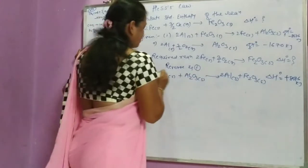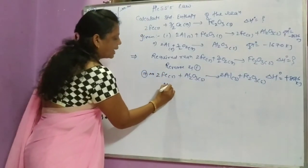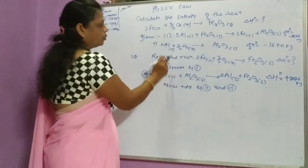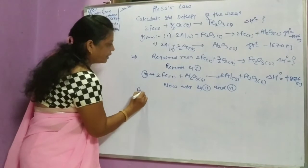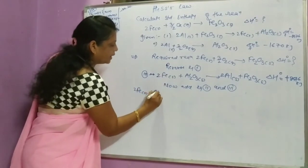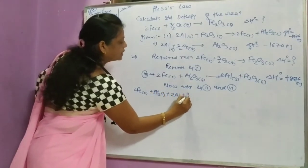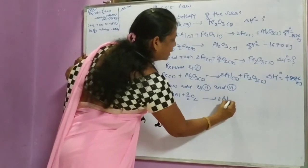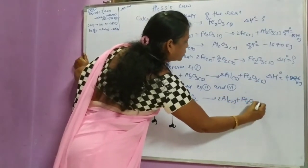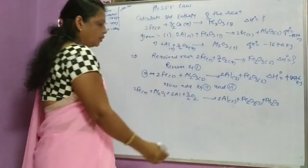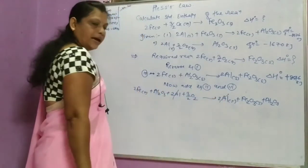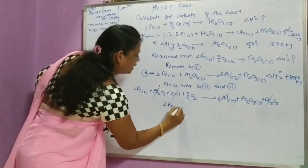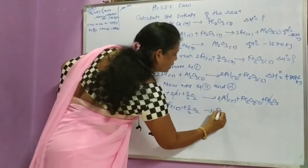This is equation number 3. Now add equation number 2 and equation number 3. So we get: Fe solid twice plus Al2O3 plus twice Al plus 3/2 O2 on the reactant side, and on the product side twice Al solid plus Fe2O3 solid plus Al2O3. Twice Al and Al2O3 are common on both sides, so they cancel. The remaining equation is: twice Fe plus 3/2 O2 giving Fe2O3.